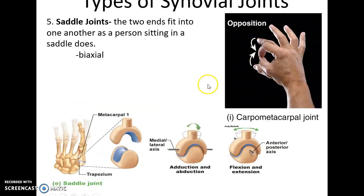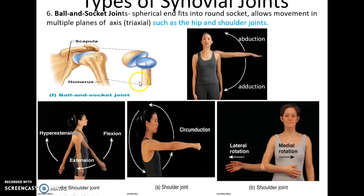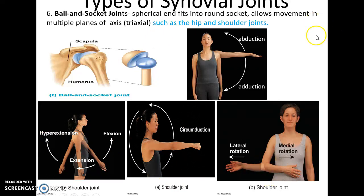In the wrist, you can get abduction and adduction. Saddle joints are a little more extreme in shape — it looks kind of like a saddle. Saddle joints are also biaxial. The most famous one is between metacarpal one and the trapezium, which gives us the ability to move the thumb inward — the opposition movement. The ball-and-socket joint is the most versatile, triaxial, allowing a huge range of motion: a large rounded head fits into a big socket. Movements include abduction, adduction, flexion, extension, hyperextension, circumduction, and lateral and medial rotation.